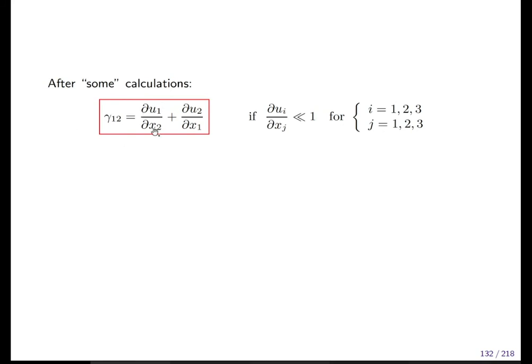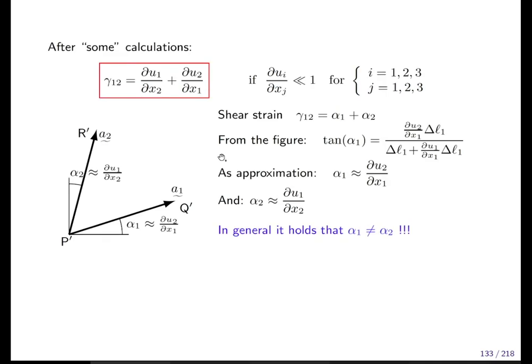Now du_1/dx_2 plus du_2/dx_1 is γ_12. If you change the index γ_21, you just exchange these two terms and it's identical. So symmetry is given for free for this definition. γ_12 equals γ_21. All this.